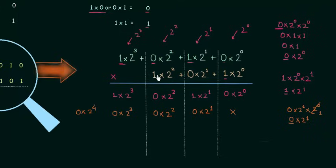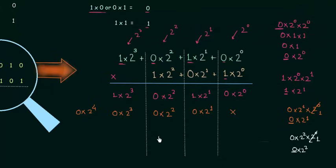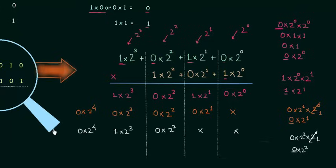Now I will repeat the same procedure for this 1. 1 multiplied by 0 is 0; the weight is 2 raised to power 2 multiplied by 2 raised to power 0, giving 2 raised to power 2, so the result settles in the third column. I will put cross marks in columns 1 and 2. Then 1 multiplied by 1 is 1, 1 multiplied by 0 is 0, and 1 multiplied by 1 is 1.